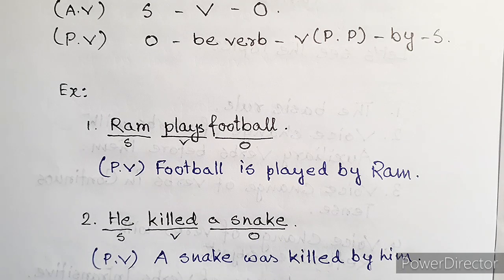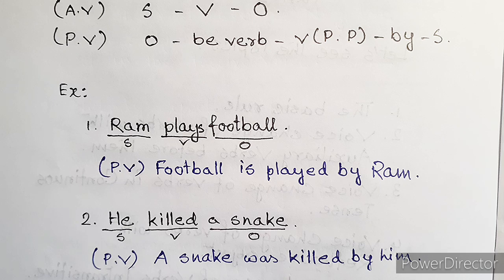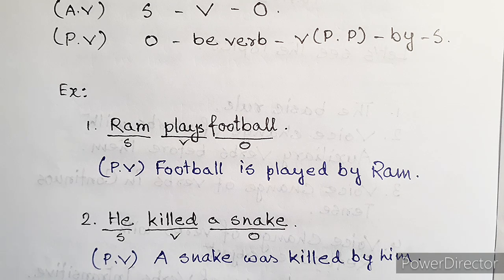Take example one: 'Ram plays football.' The verb is 'plays,' the subject is 'Ram,' and the object is 'football.' The verb is in present tense and 'football' is third person singular. So the passive form is: 'Football is played by Ram' — using be-verb 'is' because the verb is present tense and the object is third person singular.